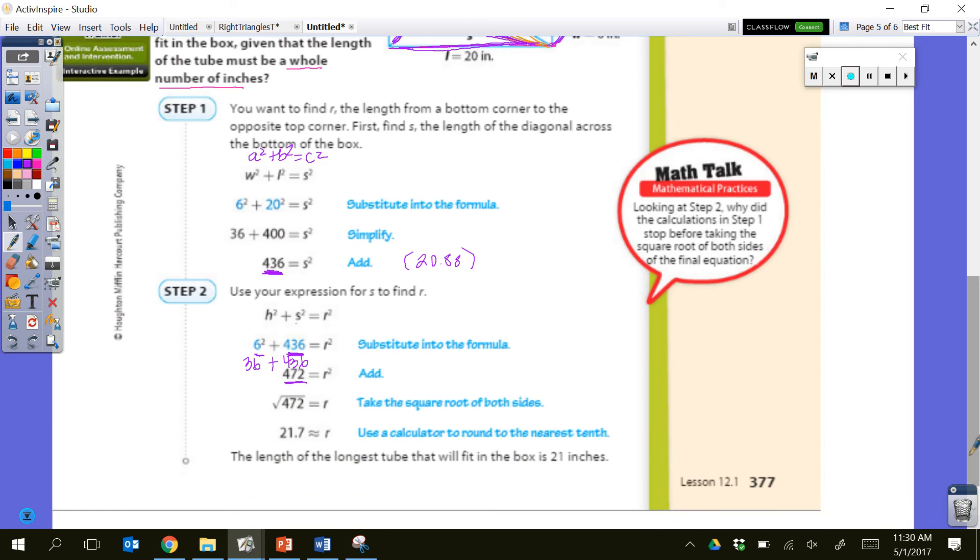Okay, so now we're going to go ahead and try and find the square root of that number, square root of 472, and we get approximately 21.7. Okay, we rounded to the nearest 10. And if we are asking what length, let's see, the length of the tube that must be in a whole number of inches, because that's what it's asking us up here, we'd round that to 21 inches.